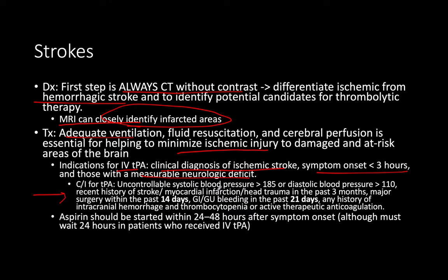Contraindications to TPA: uncontrollable blood pressure — if you give a thrombolytic with insane blood pressure, the ischemic stroke quickly turns hemorrhagic. Recent history of stroke, myocardial infarction, or head trauma in the past three months (90 days). Major surgery within the past two weeks. Any GI or GU bleeding in the past 21 days (three weeks). So: three months for stroke/MI/head trauma, two weeks for surgery, three weeks for GI/GU bleeding.